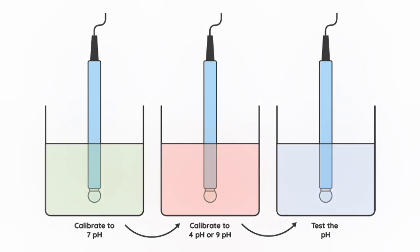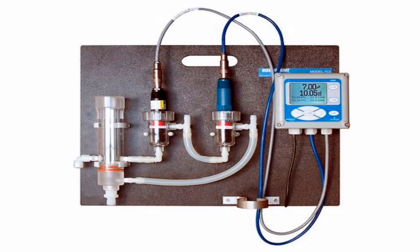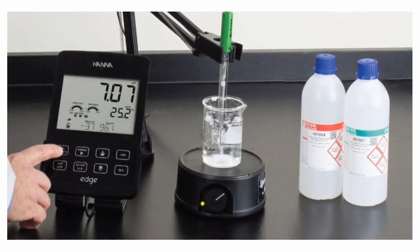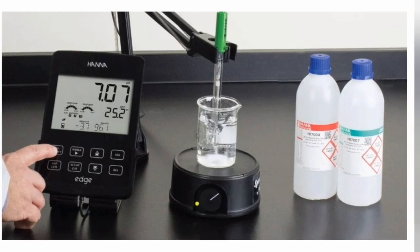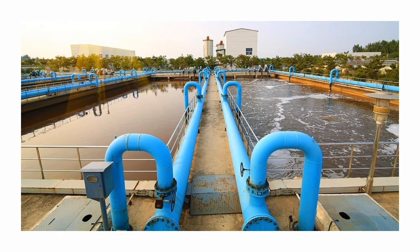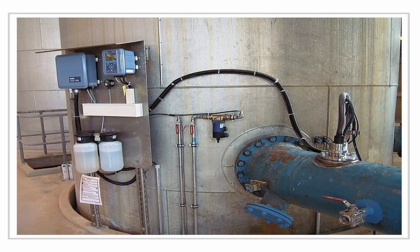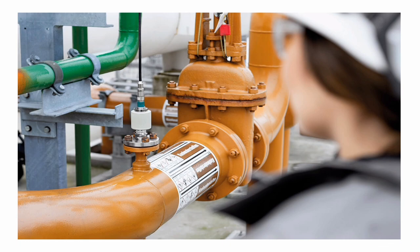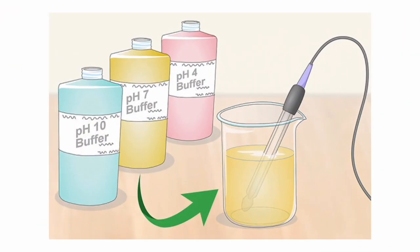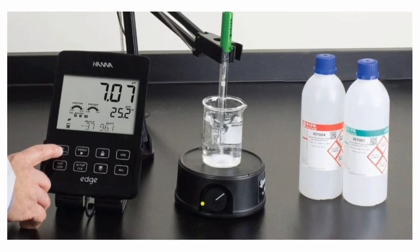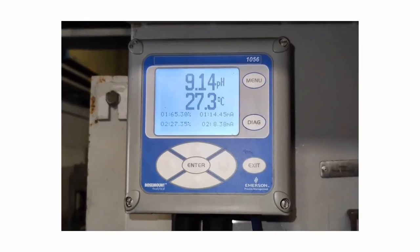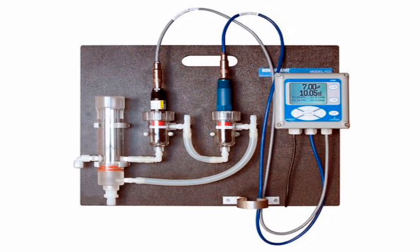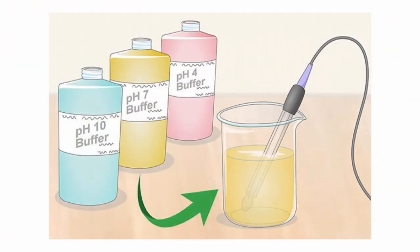Place the electrodes in the buffer solution with a pH of 7 and allow the pH reading to stabilize at 7. Next, the sensor is cleaned with DM water. This is the process for the calibration of pH meters.